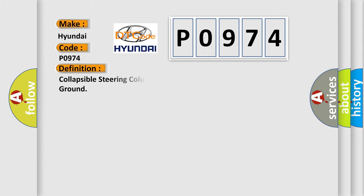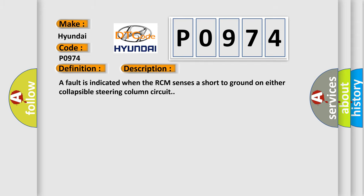The basic definition is Collapsible Steering Column Deployment Control Circuit Short to Ground. And now this is a short description of this DTC code. A fault is indicated when the RCM senses a short to ground on either collapsible steering column circuit.